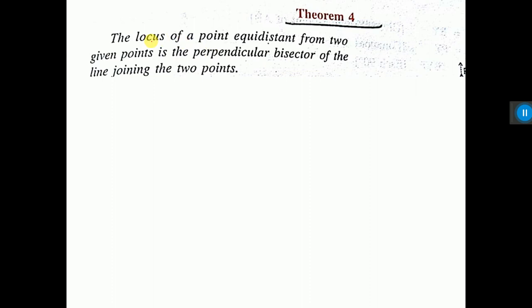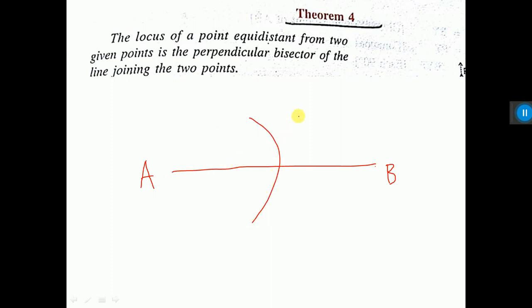Another theorem: the locus of a point equidistant from two given points. Let's say A and B are two points — it's the perpendicular bisector of the line joining the two points. So the locus of the point equidistant from two given points means: you join A and B, then you bisect the line AB — from A one arc and from B another arc, you join these two — let's say you are getting MN.